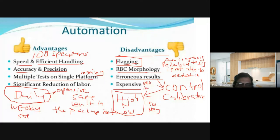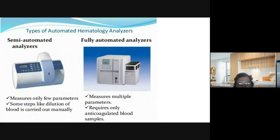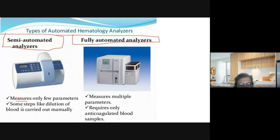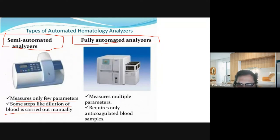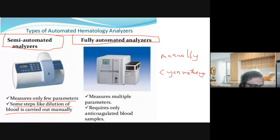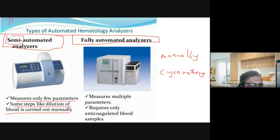There are two types of automated hematology analyzers: semi-automated and fully automated. Your semi-automated analyzers would measure only a few parameters; some steps like dilution of blood are carried out manually. An example of a semi-automated analyzer in hematology is the cyanmethemoglobin method — you prepare the blood and the reagent manually, then feed it into the spectrophotometer. That is an example of semi-automated — meaning half manual, half automated.